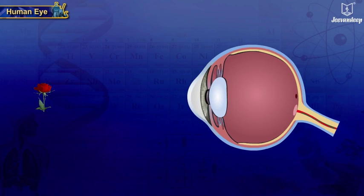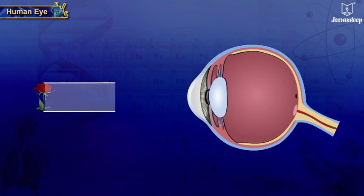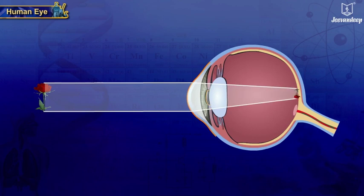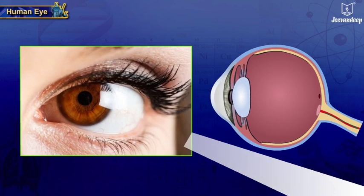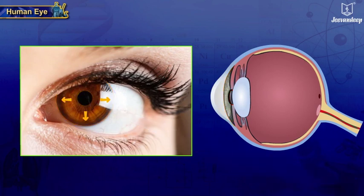The amount of light that enters through the pupil is regulated by the iris. The contraction and relaxation of the iris expands and contracts the pupil.